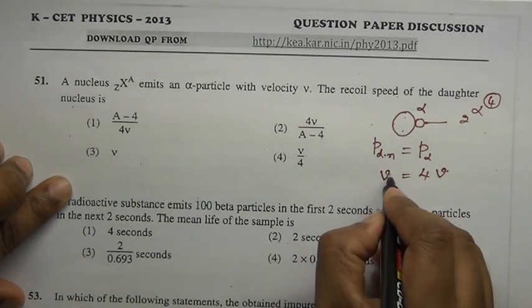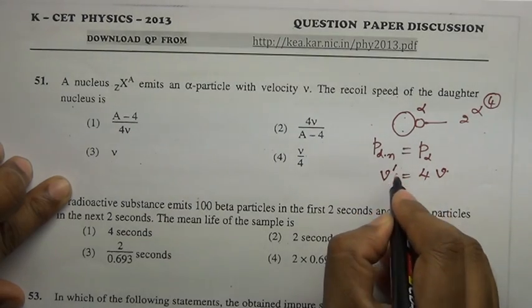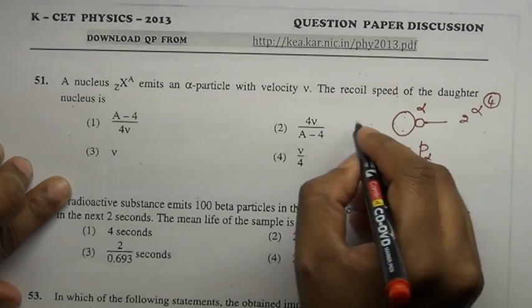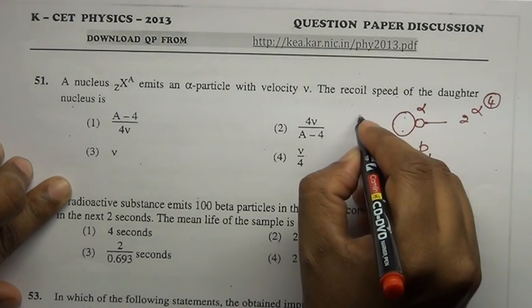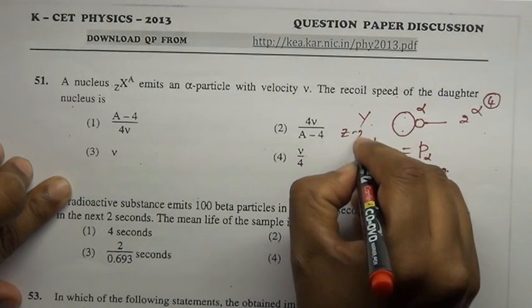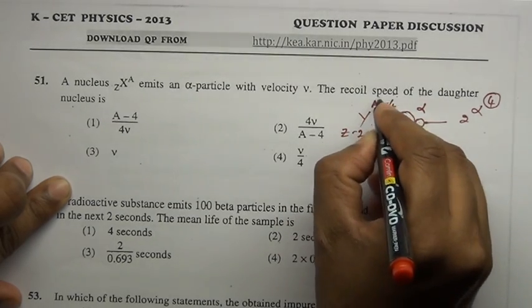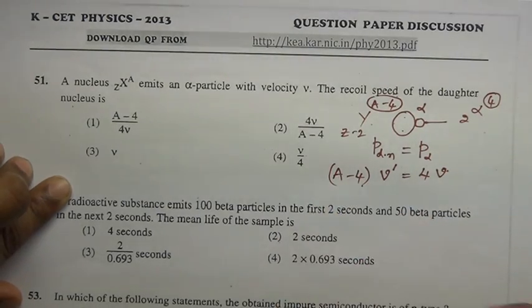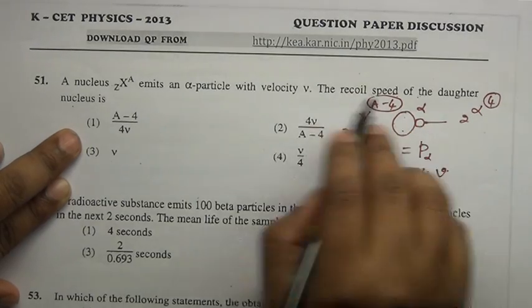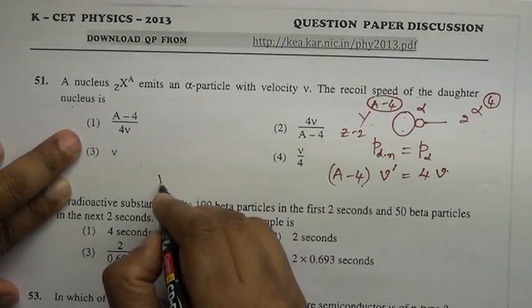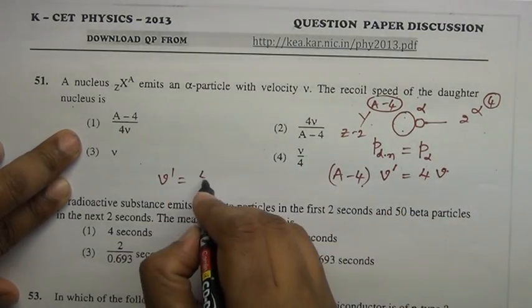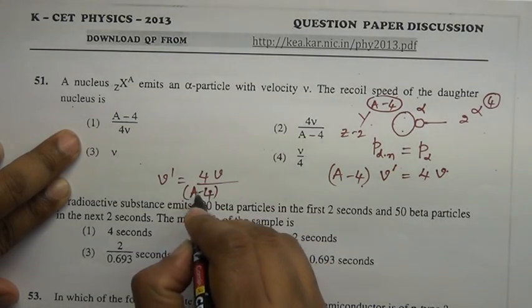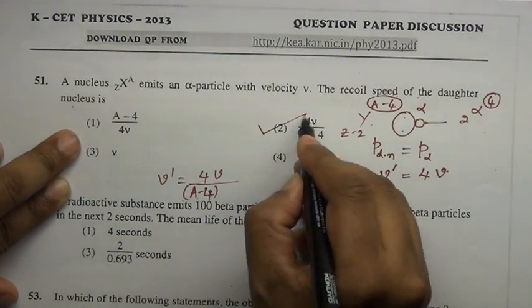The recoil speed of the daughter nucleus is v'. If the parent nucleus has mass number A, it emits an alpha, so the daughter nucleus is (A−4) nucleons. By momentum conservation: 4v equals (A−4) times v'. Therefore the recoil speed v' equals 4v / (A−4).